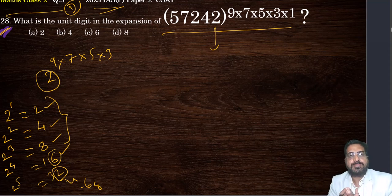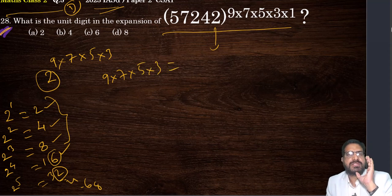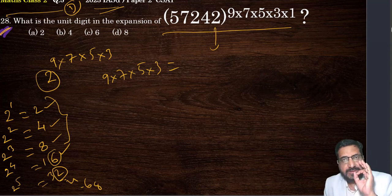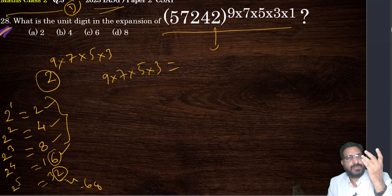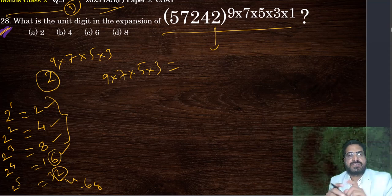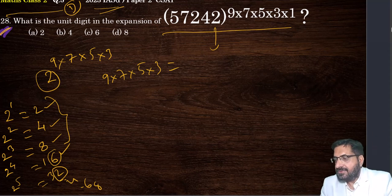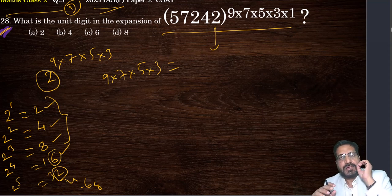After every fourth step the pattern is repeating for the powers of 2. So here 2 raised to (9 × 7 × 5 × 3). First find out what is 9 × 7 × 5 × 3. You have to be very, very good at multiplication tables — memorize all the multiplication tables. Please write all these multiplications and paste them on your study room's wall. Keep on memorizing. Saving time.